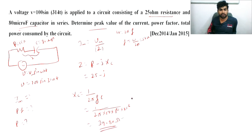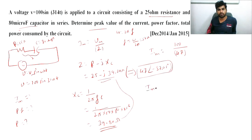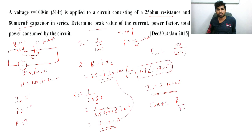Substituting, Z = 25 − j39.80. Converting to polar form using calculator: Z = 47 ∠ −57.08°. So Im = Vm/|Z| = 100/47 = 2.1276 amps. Power factor cos φ = R/|Z| = 25/47 = 0.5319.